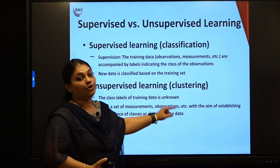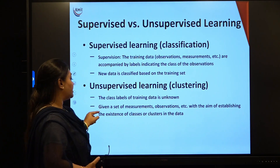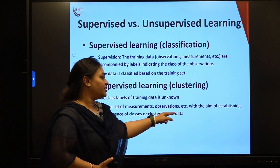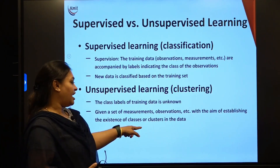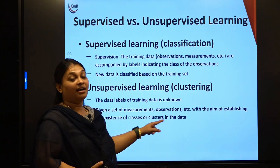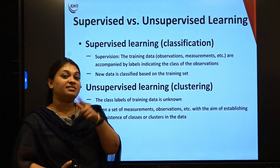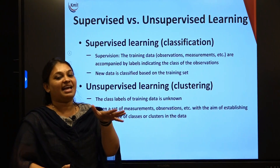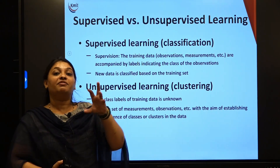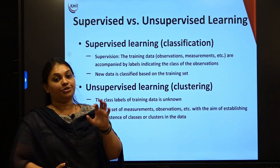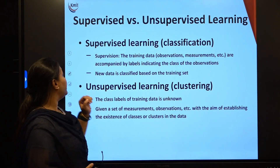In unsupervised learning the class labels in the training data are unknown. Given a set of measurements or observations, the aim is to establish the existence of classes or clusters in the data. From a group of students containing CSC, IT, AIML, and DS, we separate them into clusters — that is supervised versus unsupervised learning.